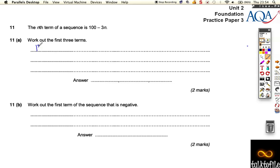Well, to work out the first term, n is 1. So if n is 1, we're doing 100 minus 3, which is equal to 97.